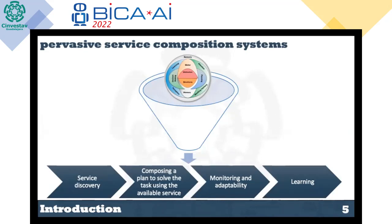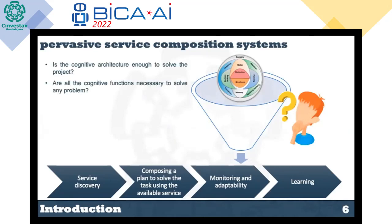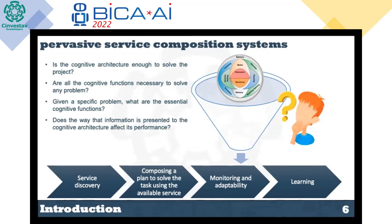Cognitive architectures would ideally be very flexible and resilient. So naturally, with this assumption, some questions arise — such as: is the cognitive architecture enough to solve any specific problem? Are all the cognitive functions necessary to solve it? Does the way that information is presented to the architecture affect its performance, and if so, which is the best way to present that information?